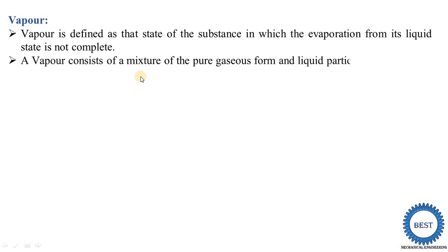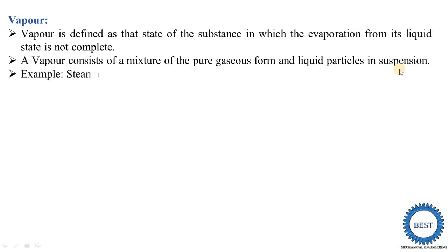So a vapor consists of a mixture of the pure gas form and the liquid particles in suspension — meaning inside the gas, the liquid particles are suspended. It is called vapor. In short, vapor is the mixture of gas as well as liquid particles. So it is a mixing of two things: one is the pure gas and one is the liquid.